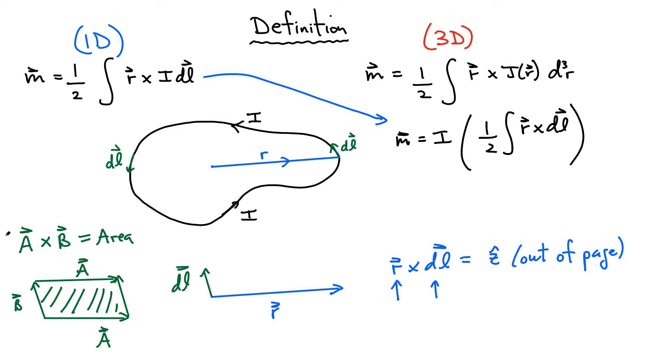So actually, if you take one half in the front of that, that simply represents half the area. Alright, because look at what we have over here in our magnetic moment definition. We have a one half and then we have this R cross DL. Well, the R cross DL simply represents the area of this small little wedge here when I include the one half.